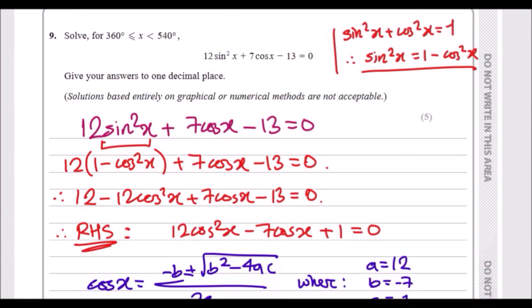Welcome back guys, here we are on question 9. It tells us that we need to solve for the given range of angles, very specific from 360 to 540 degrees. This trig equation can only be solved using trig techniques.